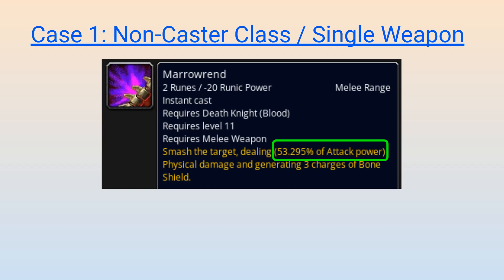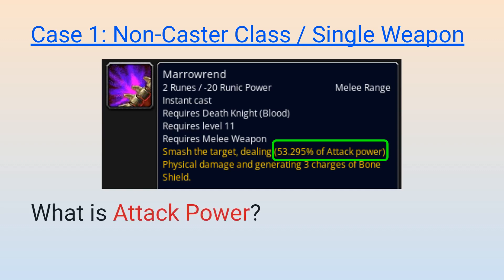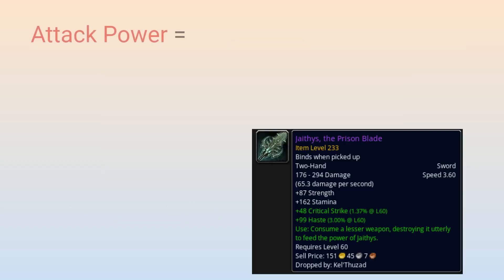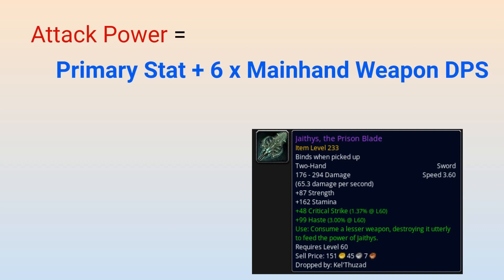So the first concept we need to explain is what attack power actually is. Attack power has worked differently throughout the different expansions of WoW, but nowadays your attack power is mostly equal to your primary stat, with some contribution from your main hand weapon DPS. For non-casters, your primary stat is either going to be Strength or Agility depending on your specialization. Every one point of your primary stat will give you one point of attack power, while the attack power contribution from your main hand weapon is 6 times your weapon DPS, where the exact attack power and base damage of your weapon largely doesn't matter for actual ability damage.